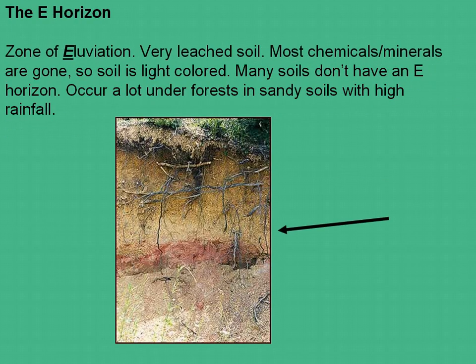The E-horizon is just below the A-horizon, and it's considered the zone of eluviation, which consists of a very leached soil. Most of the nutrients in this particular layer are gone, so the soil is rather light-colored. A lot of the major soil orders that you see in the U.S. really don't have an E-horizon. But you do see an E-horizon in forest soils or under forests and sandy soils with a lot of rainfall.